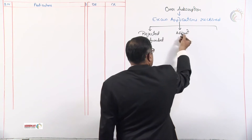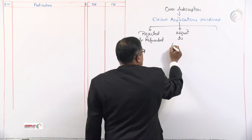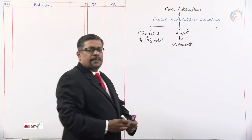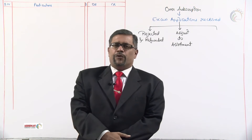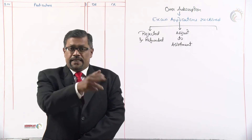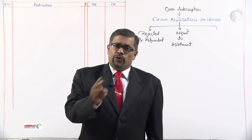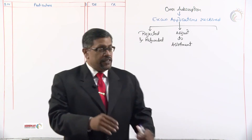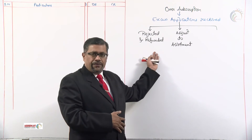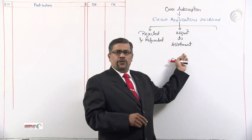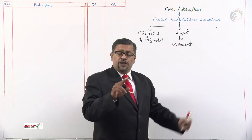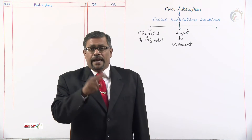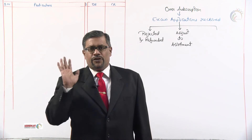The second option: the excess application money can be adjusted to allotment. For example, application money is ₹10 per share and there are 2,000 excess applications, so 2,000 × 10 = ₹20,000 extra amount received. Instead of refunding directly, we adjust it to allotment — meaning when allotment is made, ₹20,000 less needs to be received.